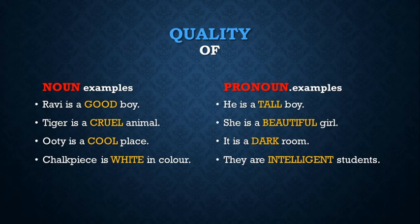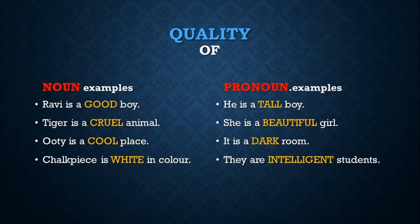I have also given examples for pronouns — he, she, it, they. In the first sentence: he is a tall boy — tall refers to the adjective. She is a beautiful girl — beautiful is an adjective. Dark and intelligent are also adjectives.